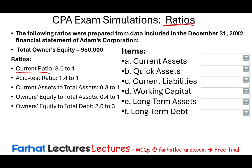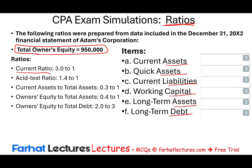I created these tables to make it look like an actual simulation — it might look slightly different, but this is representative. The following ratios were prepared from data in the December 31st X2 financial statements of Adams Corporation. The only number given directly is owner's equity of $950,000. We're given a set of ratio answers, and they want us to compute: current assets, quick assets, current liabilities, working capital, long-term assets, and long-term debt. Can we do that? Yes — you need to know how to work backward using ratios.